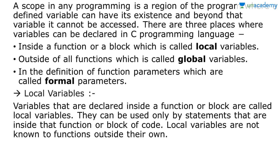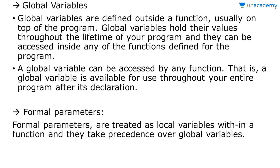Local variables are declared inside a function or block. They can only be used by statements present inside that particular function or block of code, and they are not known to functions outside. Global variables are declared outside a function, usually at the top of the program. They hold their values throughout the lifetime of the program and can be accessed by any function — the variable is available throughout the entire program after its declaration.